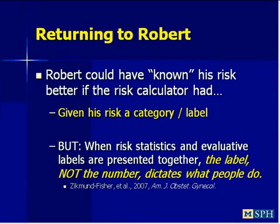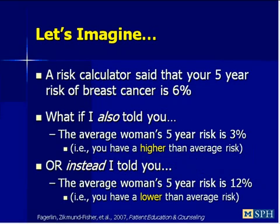What could we do for Robert? One thing is to give him a category label—classify those numbers. Is that 14 percent risk a high risk or not? That answers his question, but there can be drawbacks: research shows that when you present risk statistics and evaluative category labels at the same time, people remember those labels—they remember they're high risk—but do not necessarily remember what the numbers were. Sometimes that's a problem, because uses we want people to have for risk calculator output involve not just knowing they're at high risk but understanding the degree of risk and being able to think about how much risk will change if they do certain things.